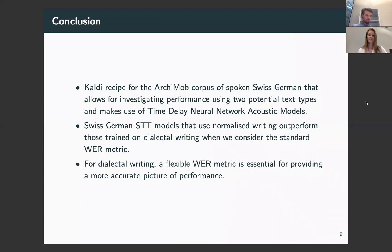To sum up, we've demonstrated the feasibility of Swiss German speech-to-text with two potential writings of Swiss German, using very limited training data and time delay neural network acoustic models with i-vectors for normalizing inter-speaker variability. Our results have demonstrated that systems trained on normalized writing outperform those trained on dialectal writings when considering only the standard word error rate metric. However, it's also clear that a flexible word error rate metric is required to provide a more accurate picture of recognition errors in Swiss German speech-to-text that uses dialectal writings. Thank you very much for your attention and we'll open up the floor to questions.